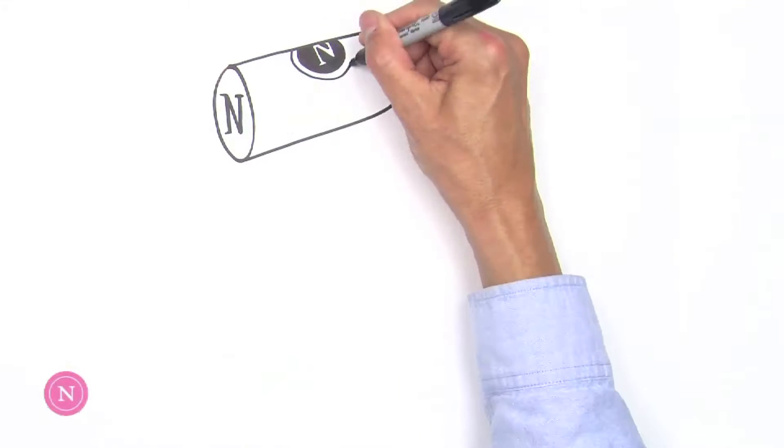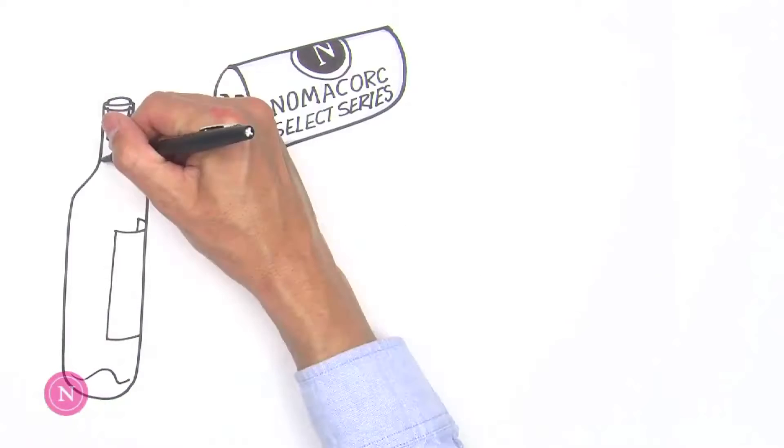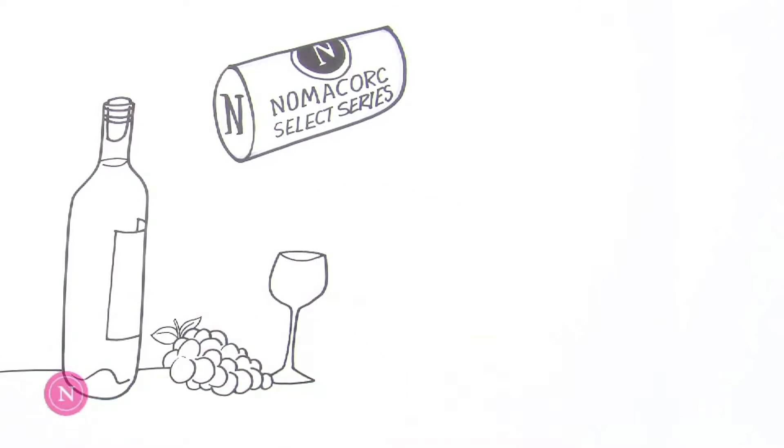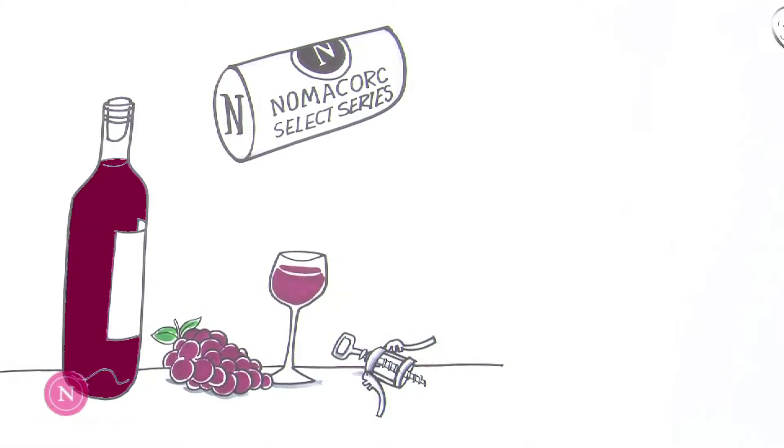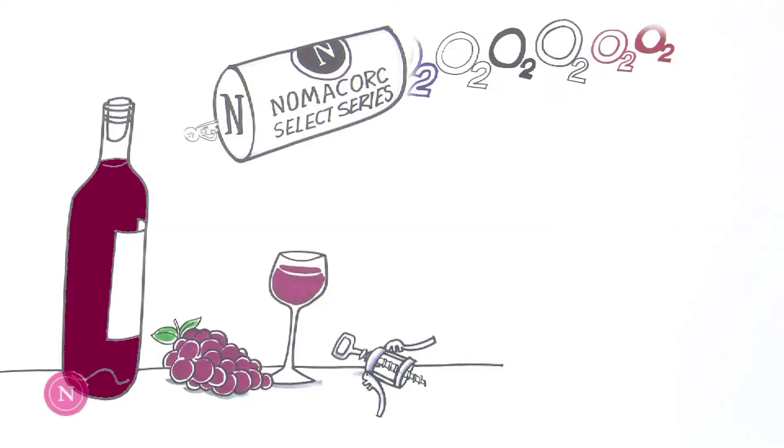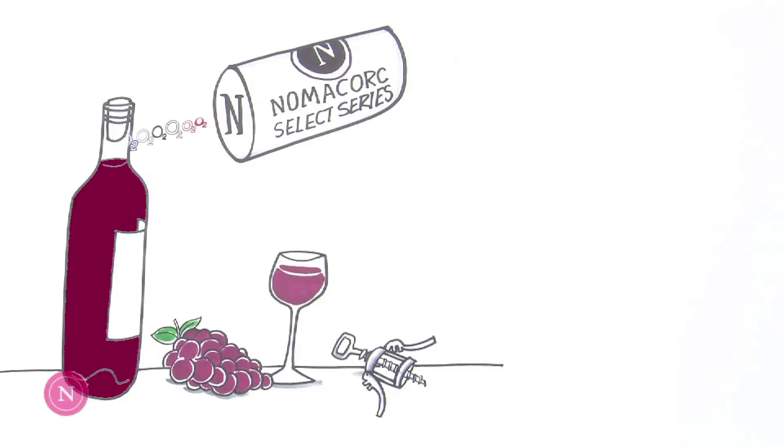To help winemakers manage a wine's development, NomaCork, a pioneer in oxygen management research and a leading manufacturer of wine closures, offers a range of engineered closures that can precisely control the oxygen transmission through the closure and into the bottle.